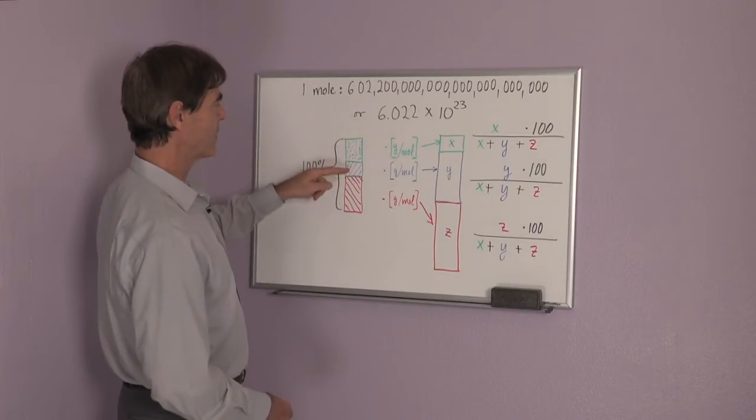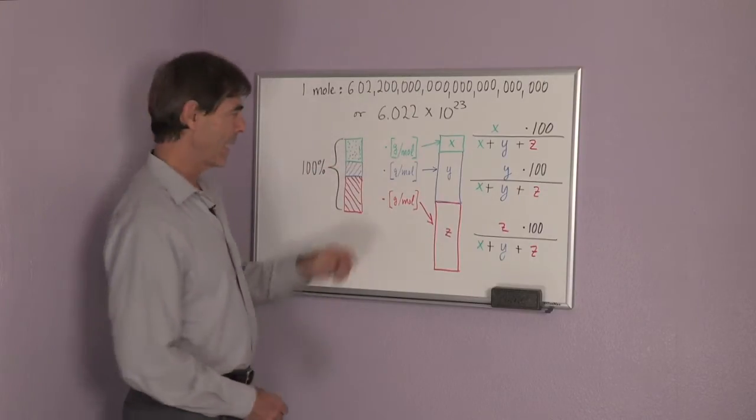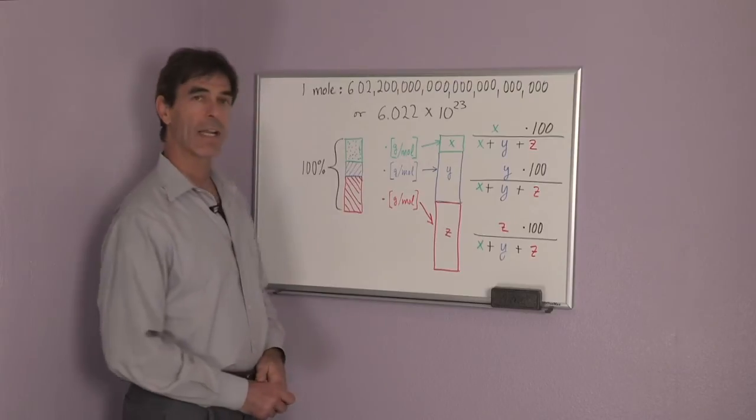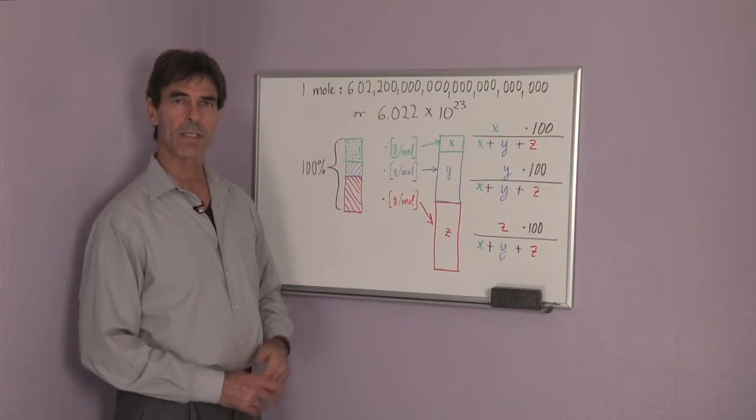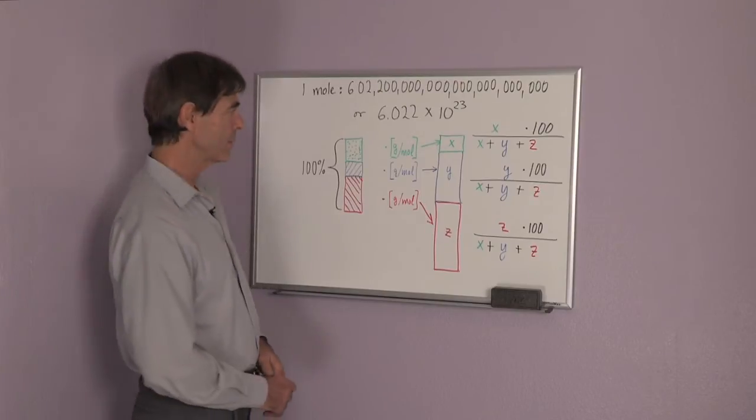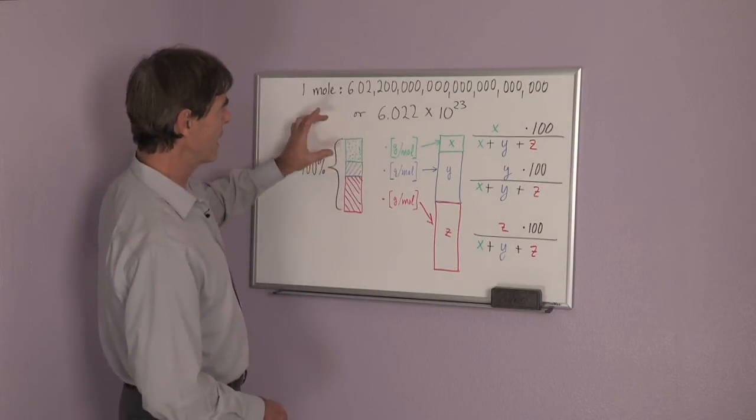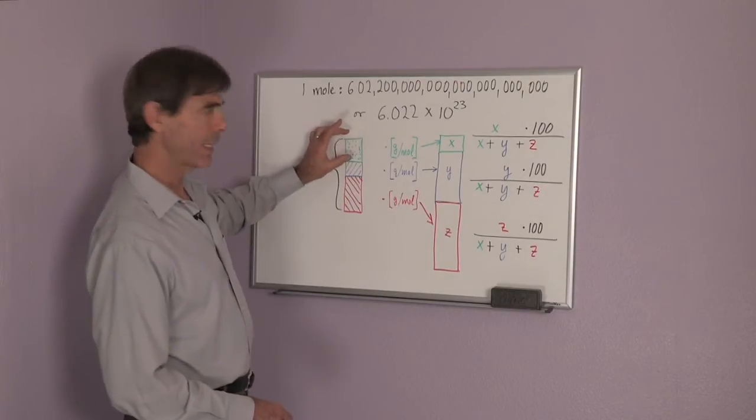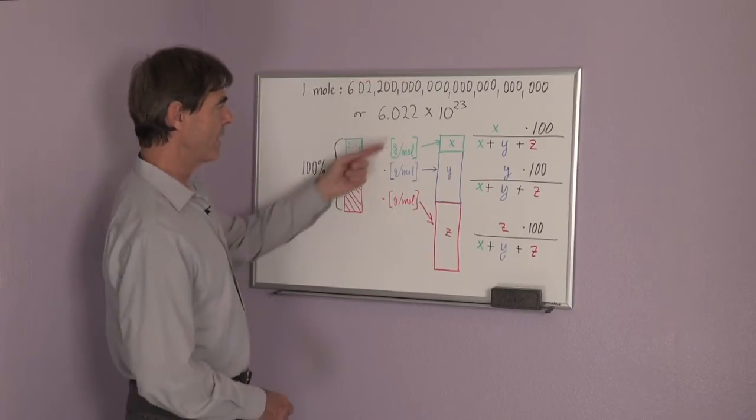Similarly, for substance blue I look up the number, and for substance red I look up the number. What is the grams per mole? That's given in a periodic table. I multiply now my mole percentage by this grams per mole and I get a number X, Y, and Z.